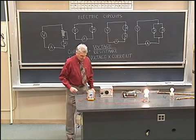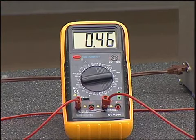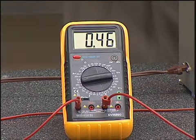Turn the power on, and we see with the resistance at the location it's at now, we have a current of about 0.46 amperes.